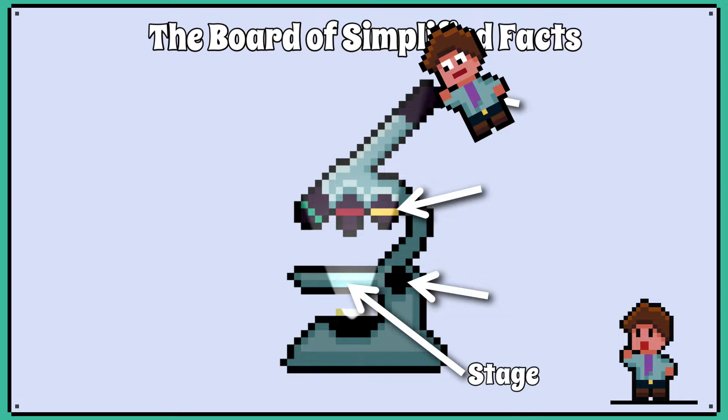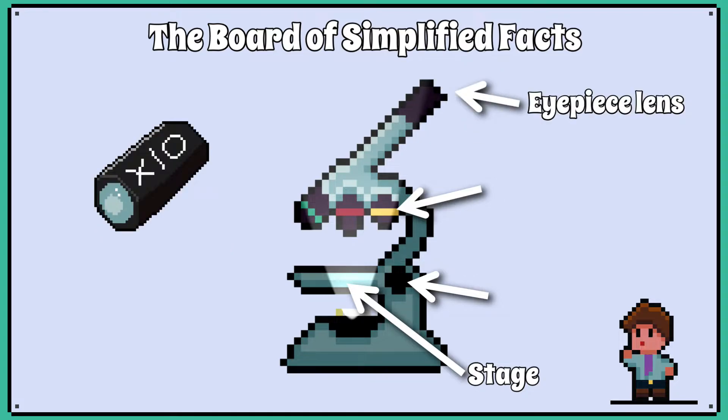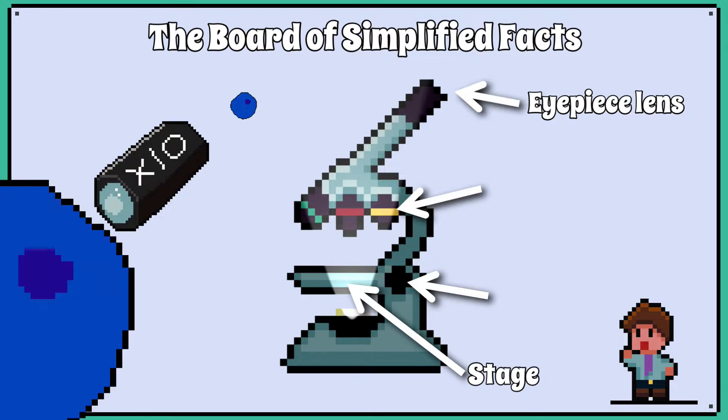What you look through is called the eyepiece lens. Normally this can't be changed and it makes objects appear 10 times larger.